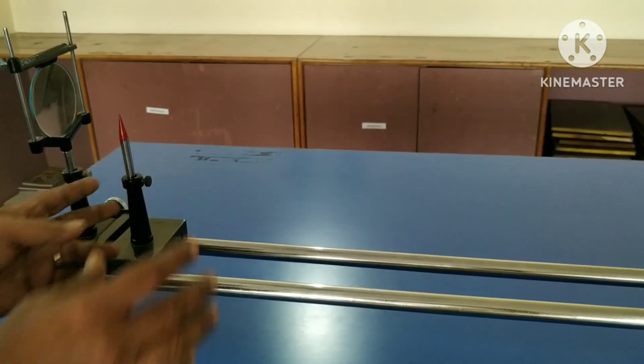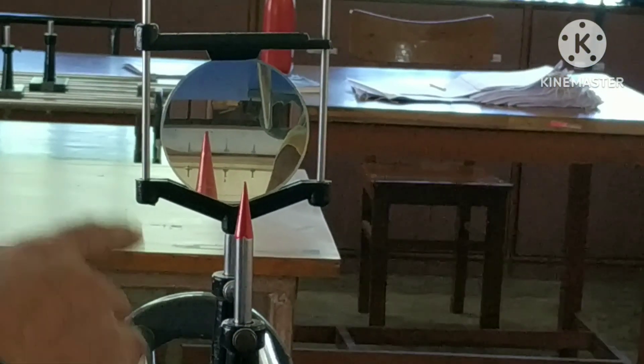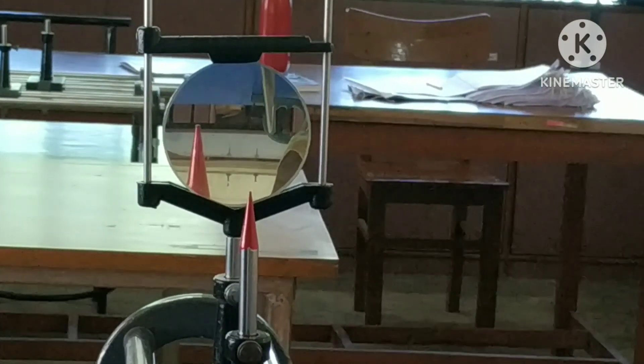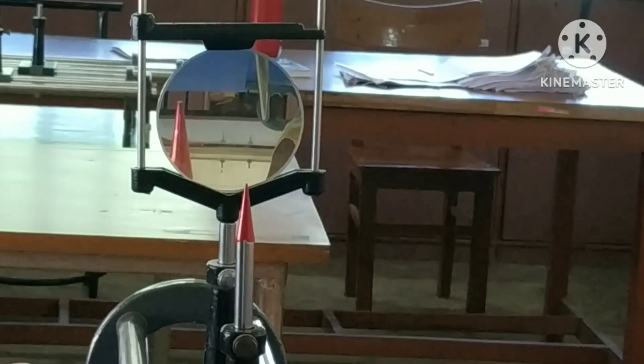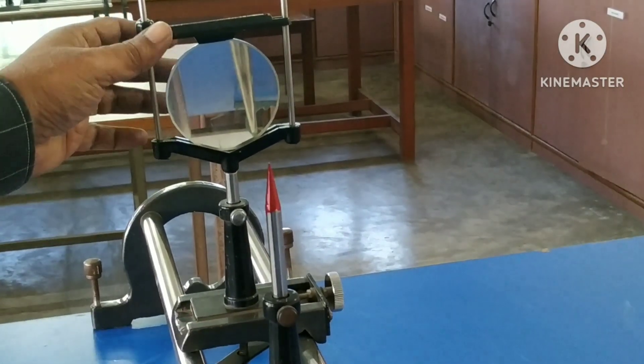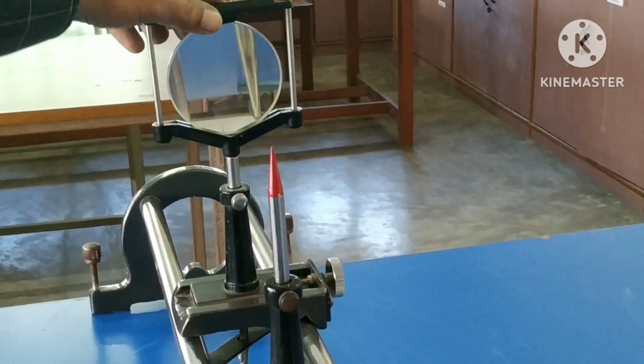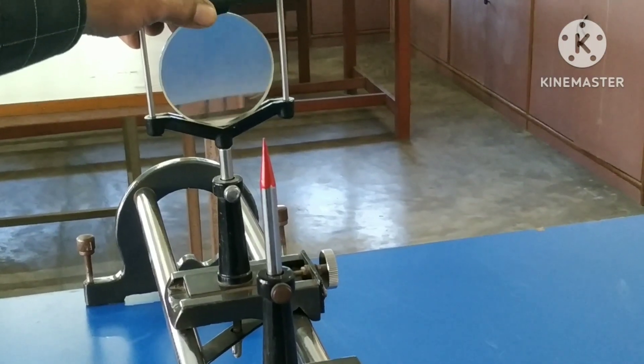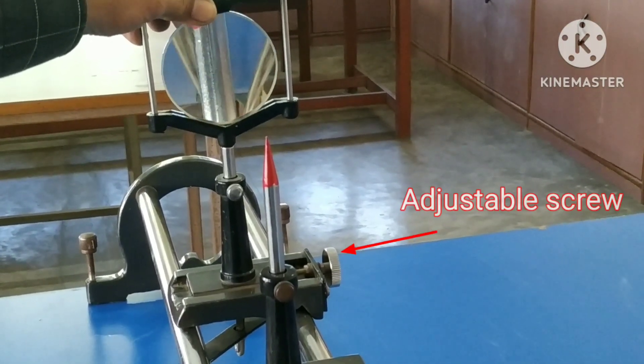Now we can see the magnified and erect image of the pin. Looking at the image, move the pin away from the mirror. At times the image may go out of the field of view. To get the image again in the field, turn the mirror slightly or adjust the screw.